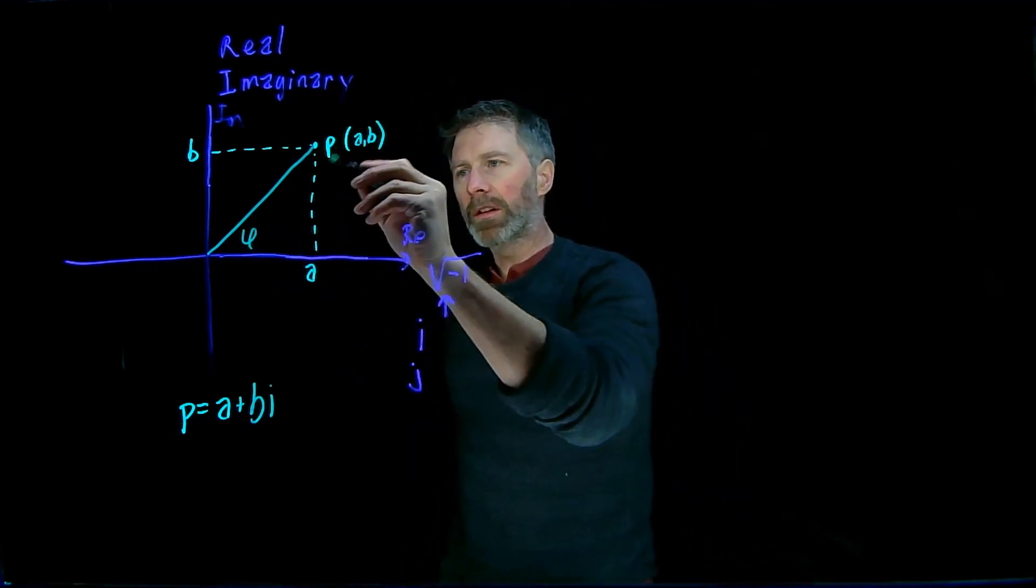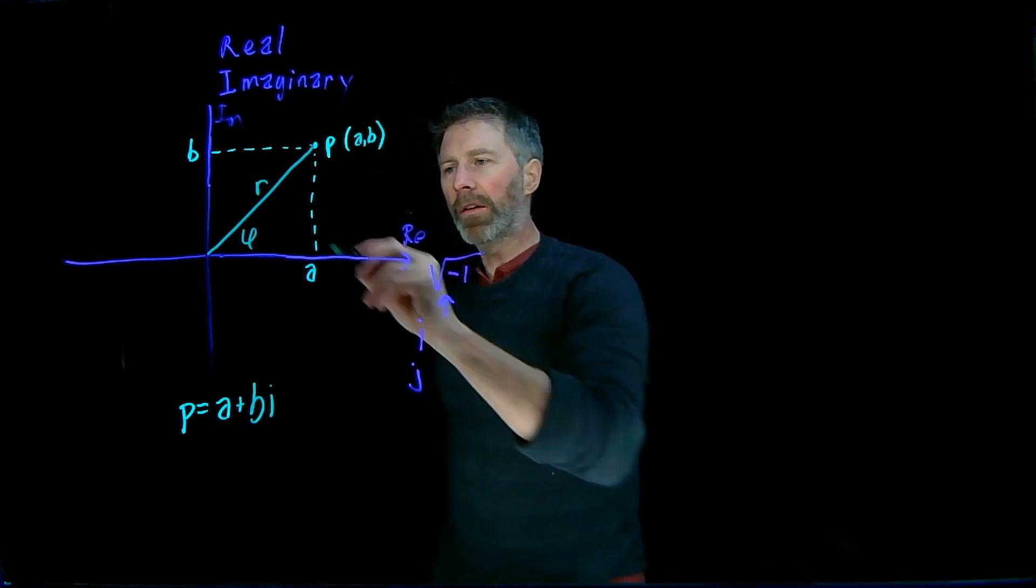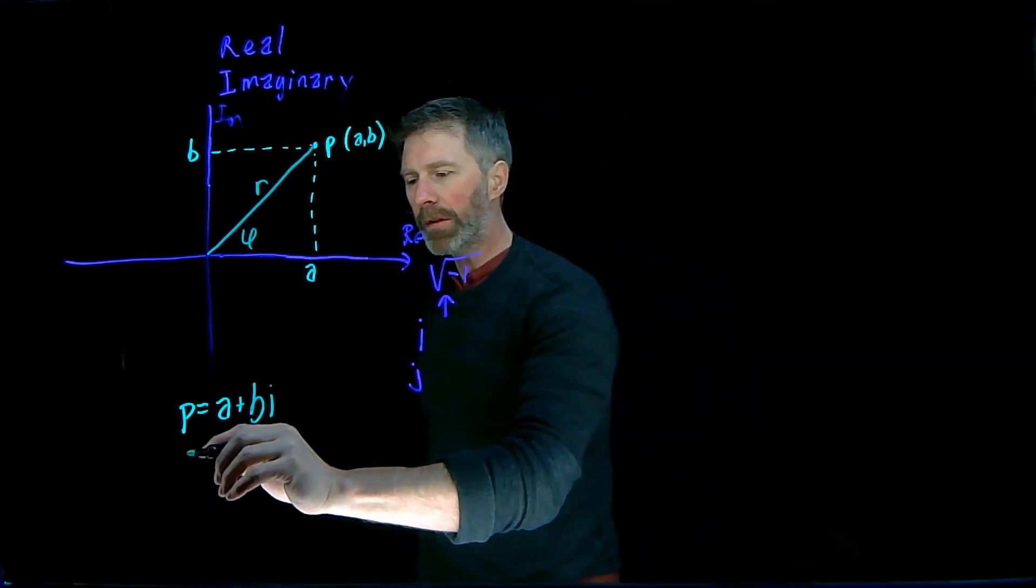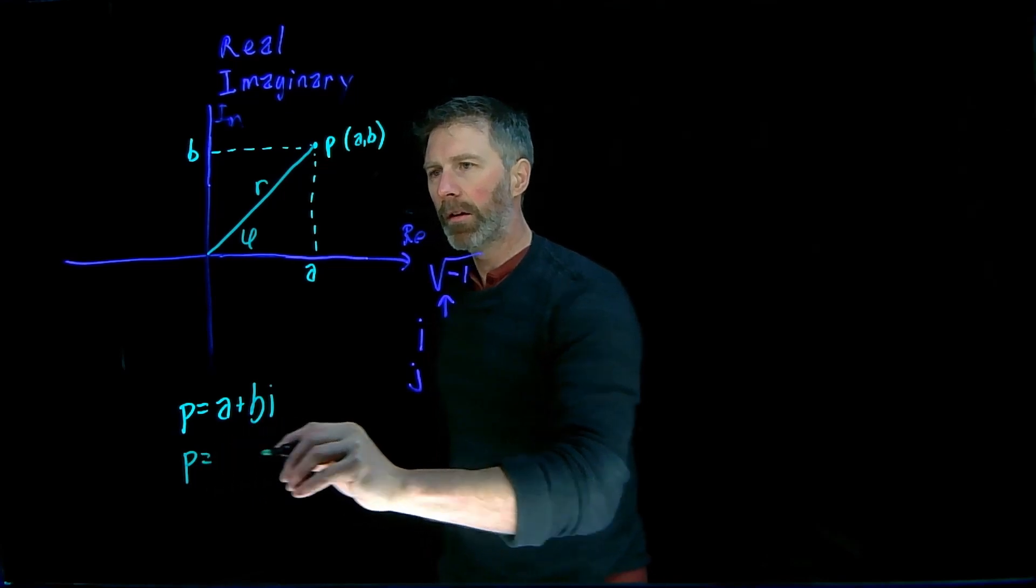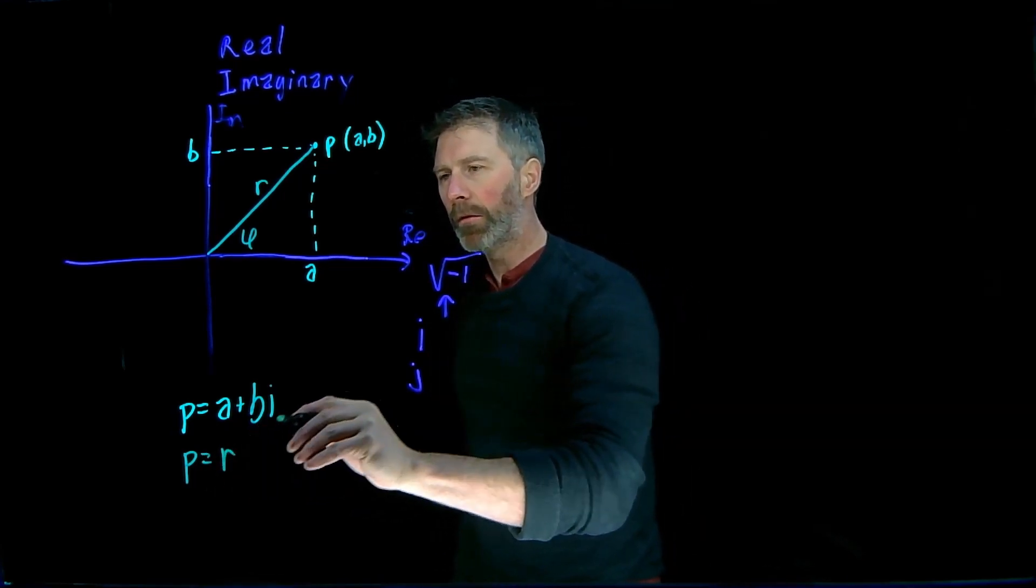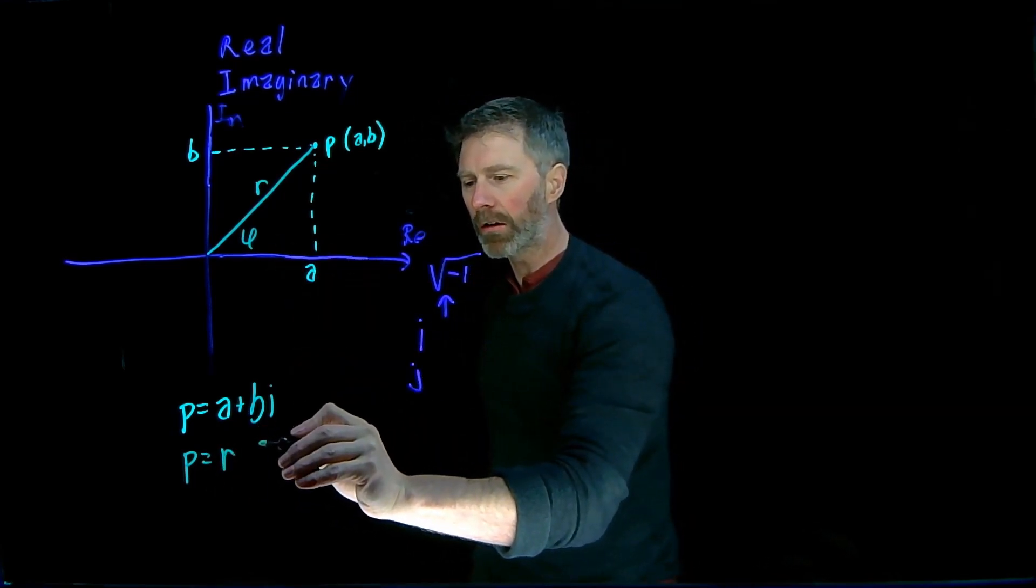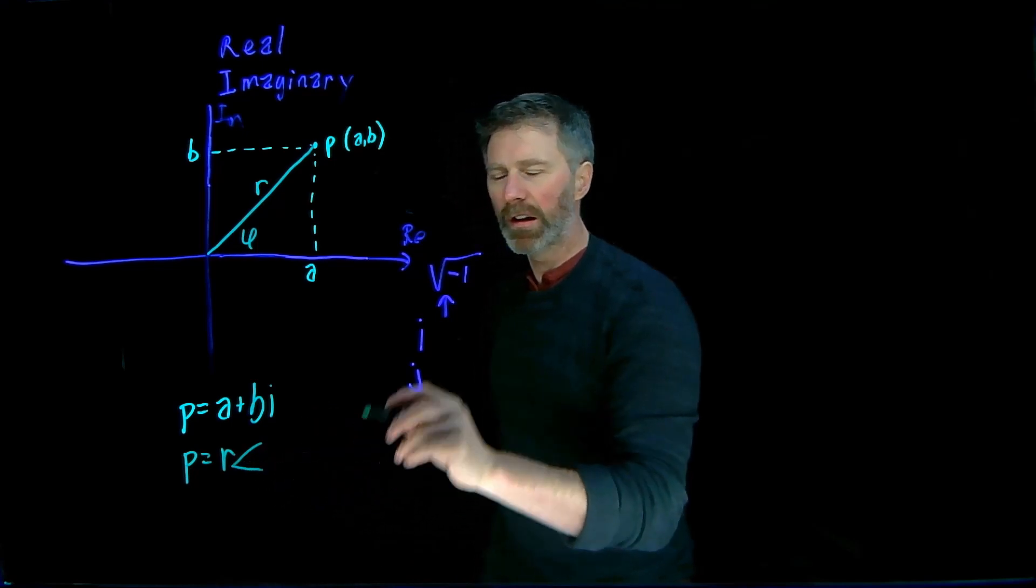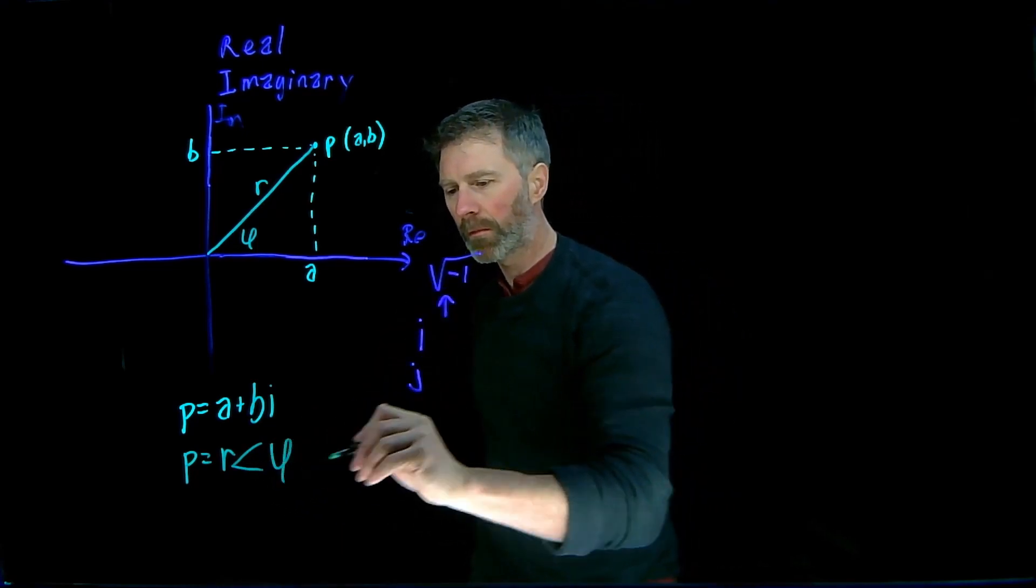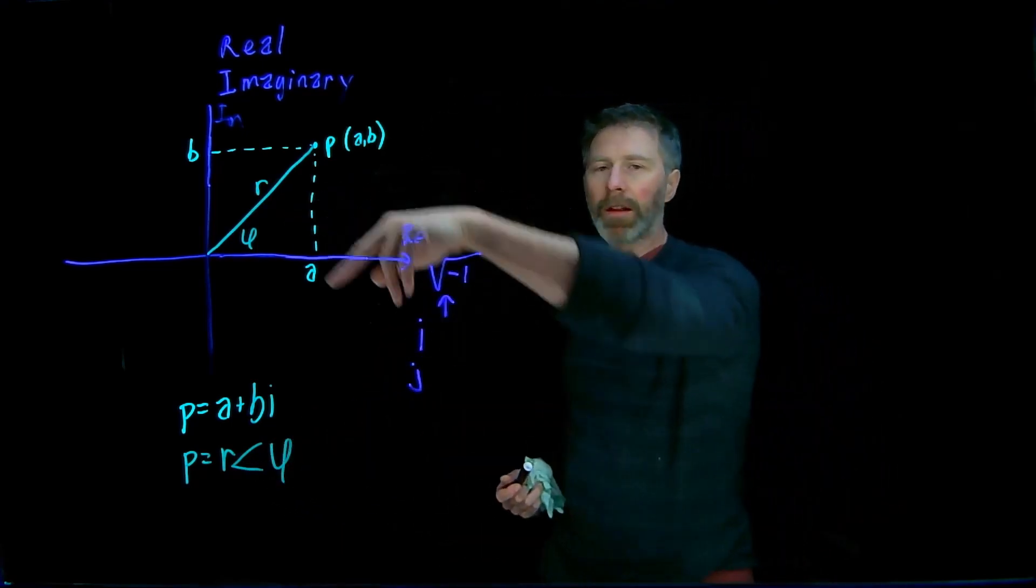So if we call this length R and the angle that it's making phi, then that P can also be represented by R with the angle of phi, and the angle notation is this little triangle with the angle that the line is making.